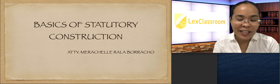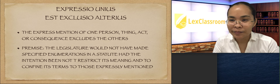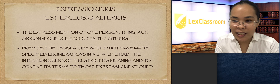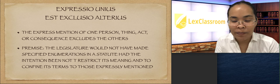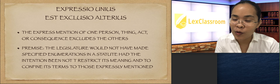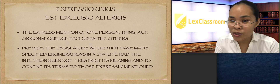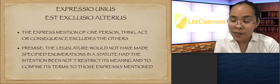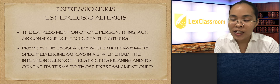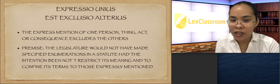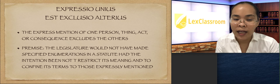Today's lesson will tackle the statutory principle 'exclusio unius est exclusio alterius.' In English, it means the express mention of one person, thing, act, or consequence excludes the others. The premise of this is basically legislative intent, because the legislature would not have made specified enumerations in a statute had the intention